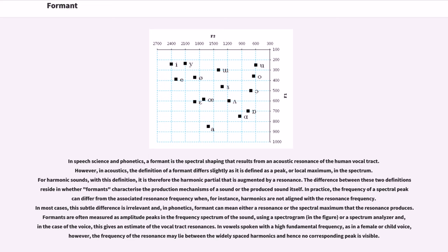In practice, the frequency of a spectral peak can differ from the associated resonance frequency when, for instance, harmonics are not aligned with the resonance frequency. In most cases, this subtle difference is irrelevant and, in phonetics, formant can mean either a resonance or the spectral maximum that the resonance produces.